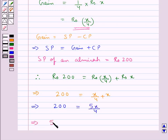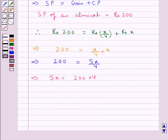Which means that Rs. 5X is equal to Rs. 200 into 4. So this gives us Rs. 5X is equal to Rs. 800.